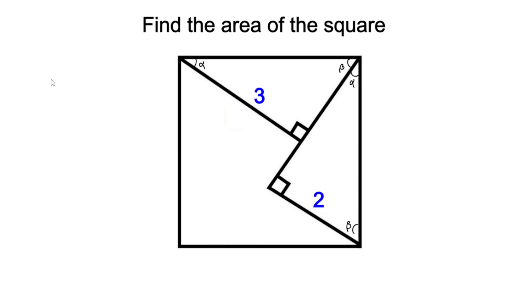Well, what we do know is that the sum of the interior angles of a triangle is equal to 180 degrees. Since these are right angle triangles we're dealing with, we can conclude that alpha plus beta is equal to 90 degrees.